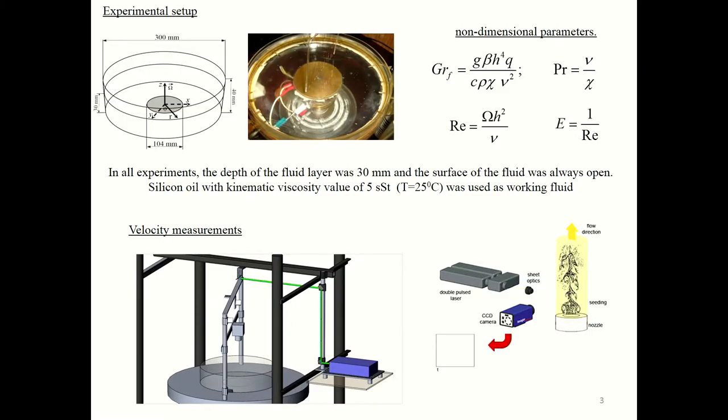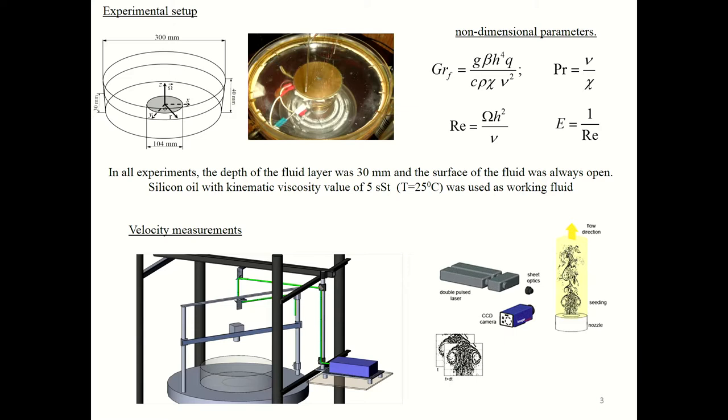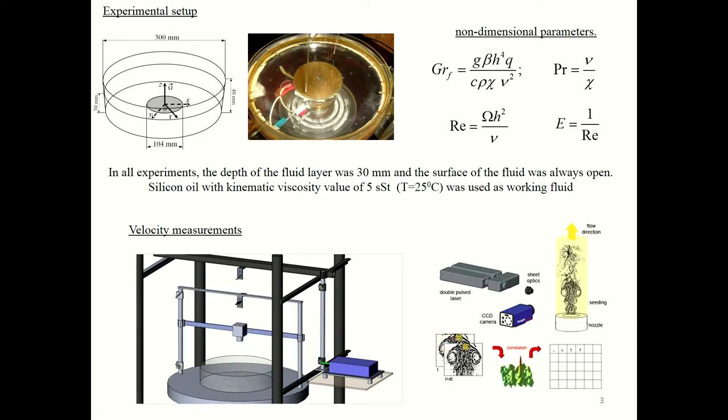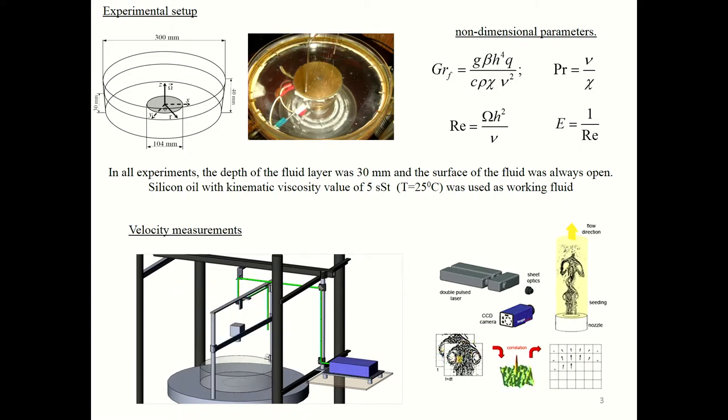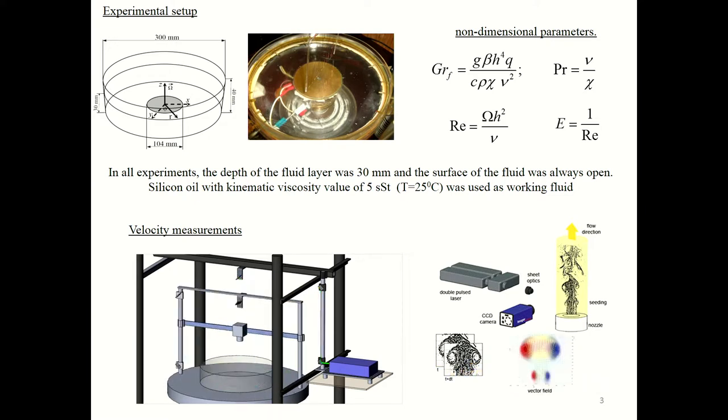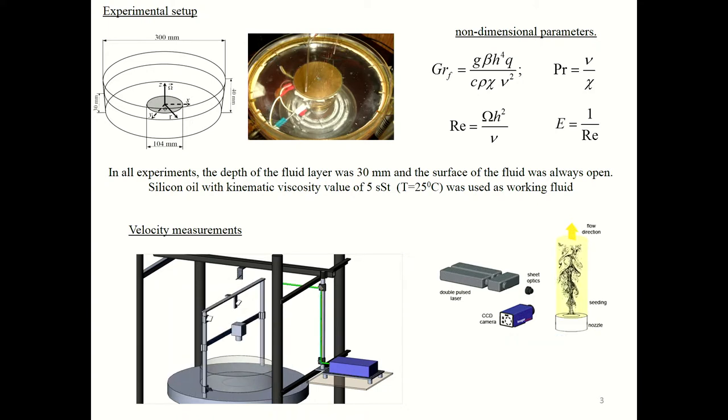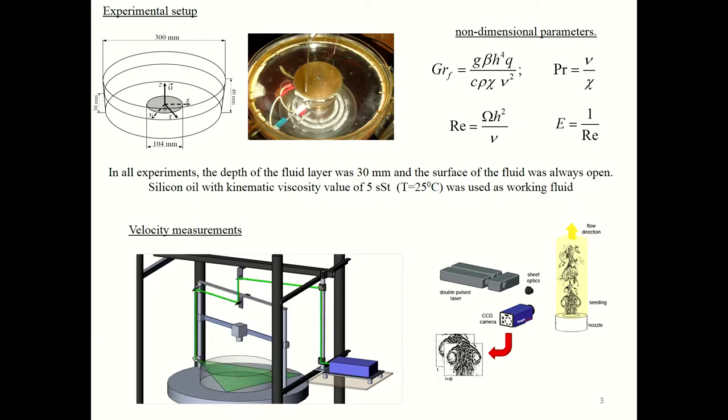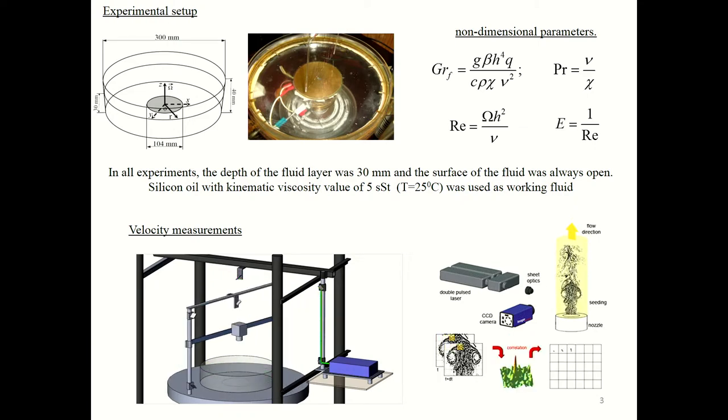As an experimental model we used a cylindrical vessel with sides and bottom made from plexiglass. The heater is a brass cylinder mounted in the center, flush with the bottom. As working fluid we used silicon oil with kinematic viscosity of 5 centistokes, where depth of the fluid layer was always 30 millimeters and the surface of the fluid was always free.